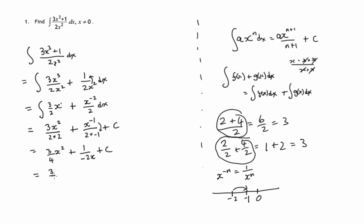So we're almost there. 3 quarters x squared. Positive divided by negative is negative. Or if we're adding a negative, it's just like subtracting a negative. So it's basically 1 over 2x plus c. And that's our final answer for that integration.